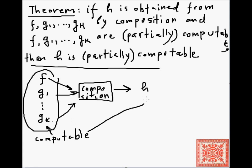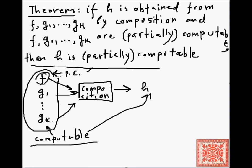And if one of them is partially computable in the sense that it is not total — we can exhibit some program, but it is not defined for some inputs — then of course h is going to be partially computable.